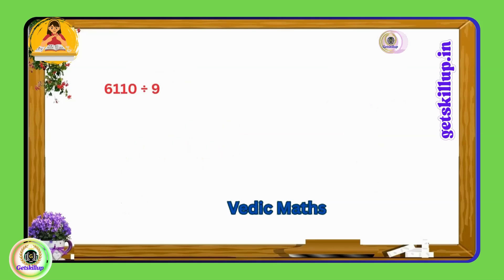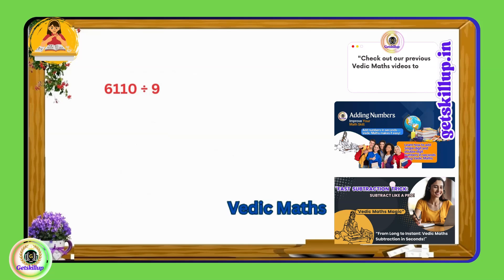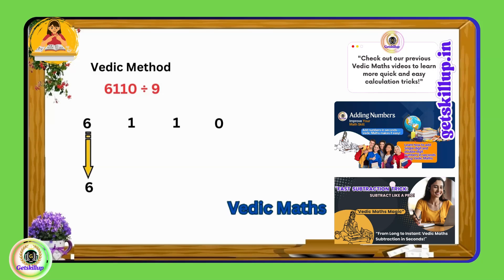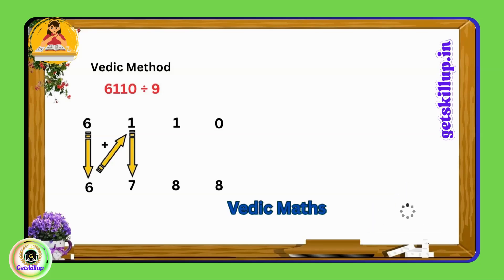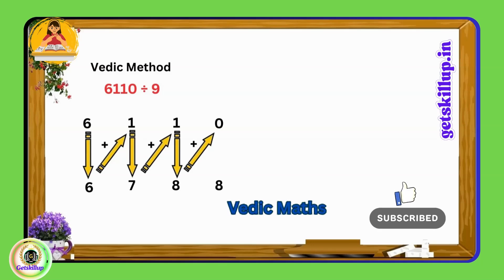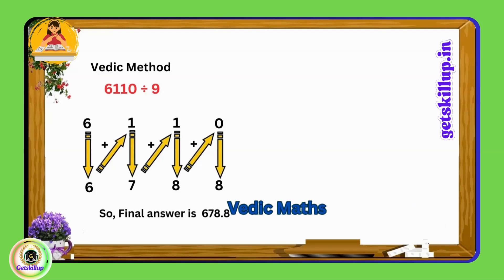6110 divided by nine. You can choose any number for practice. The first digit, 6, remains unchanged. Add the first and second digits: 6 and 1 equals 7. Write down this result, then add this result to the next digit: 7 plus 1 equals 8. Add this result to the next digit: 8 plus 0 equals 8.